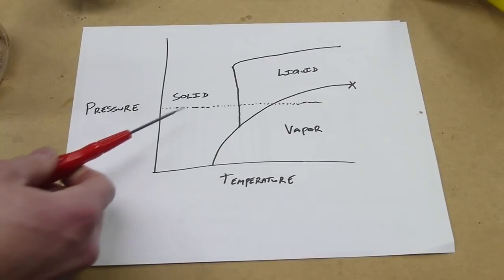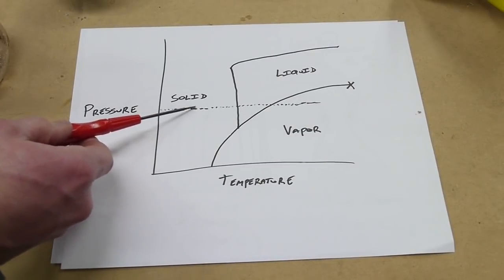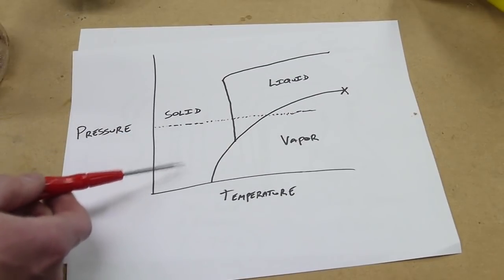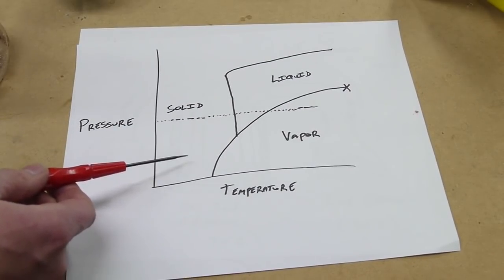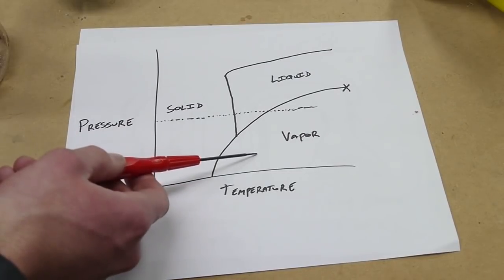But in this case what we're doing here is starting here again, the ice cream is cold and it's at atmospheric pressure and what we do is we lower the pressure. So moving down on the chart to here then we start raising the temperature. So we go straight from solid to vapor.